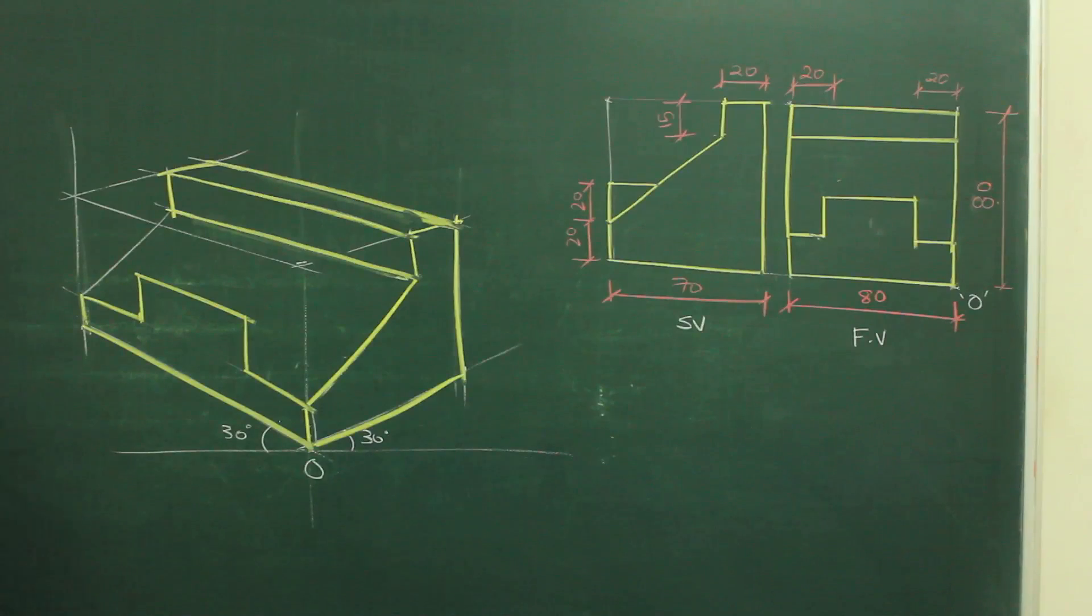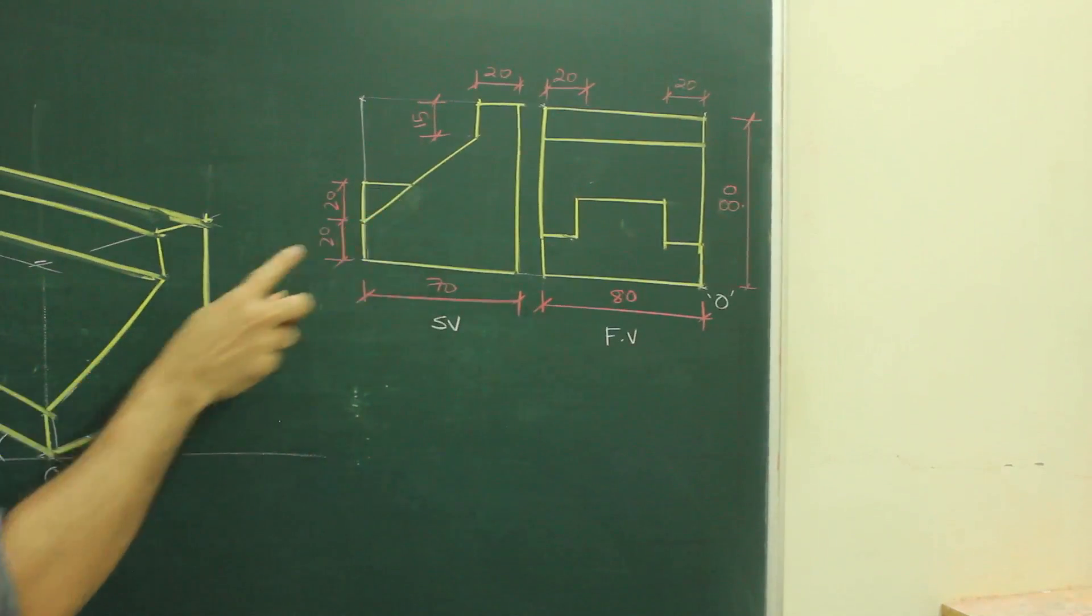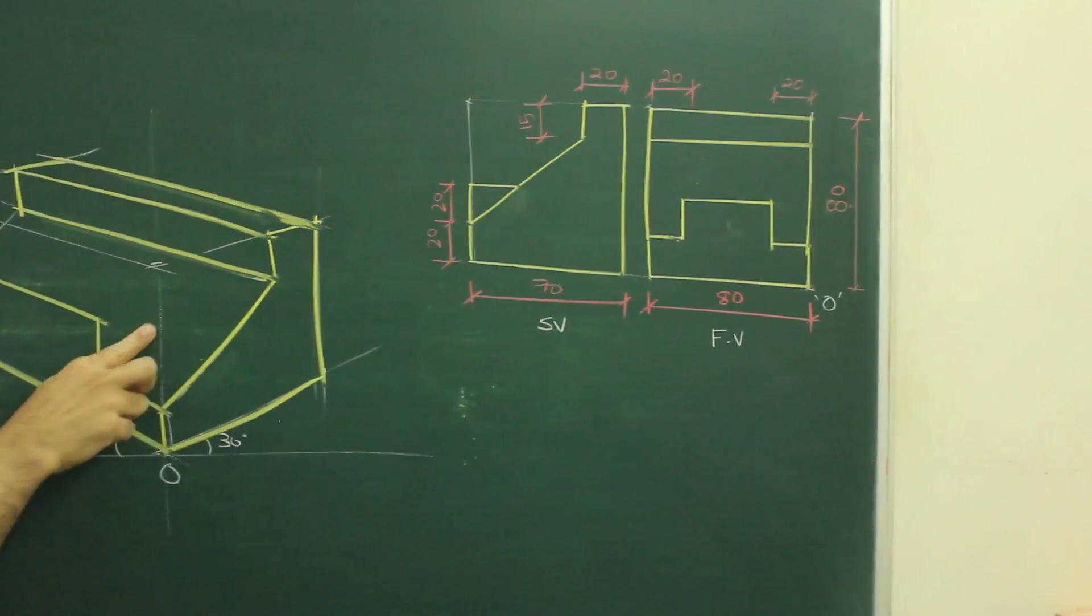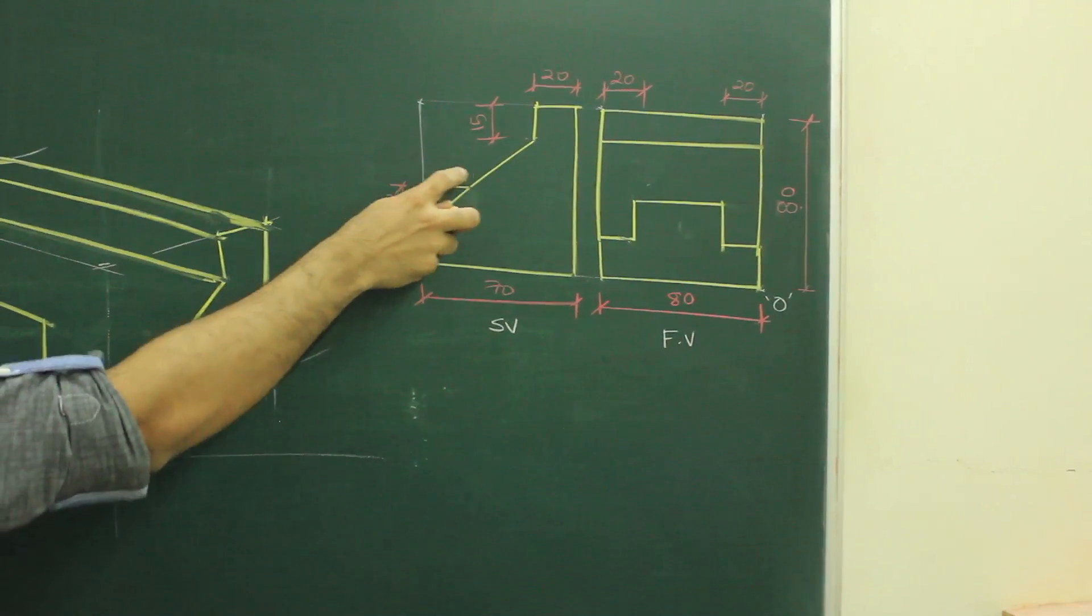Now we need to see this inclined portion. See side view, they have given incline, this part. So that means this slope and this slope is same. And on top of that, we don't have this length also. So what we need to do, we need to draw line parallel to this, passing through this point.